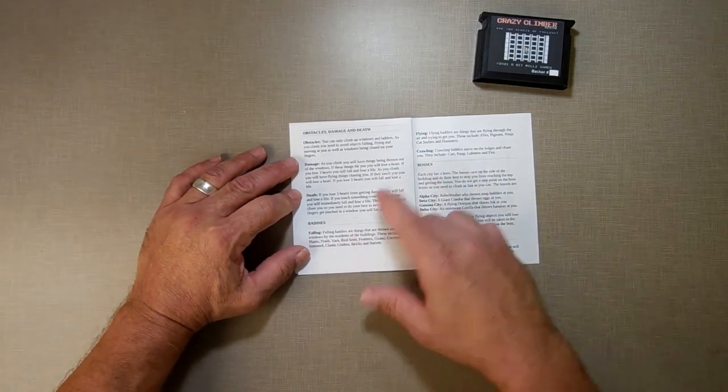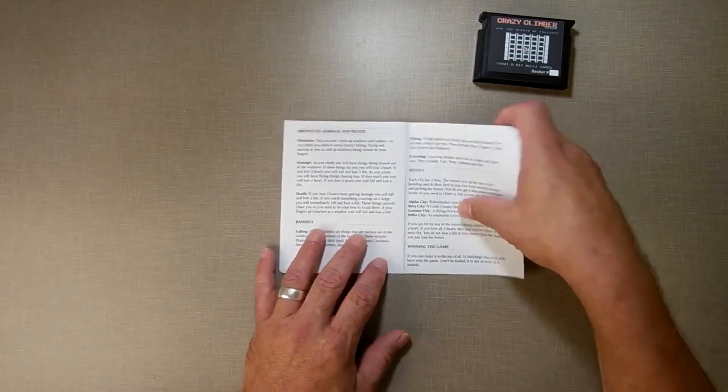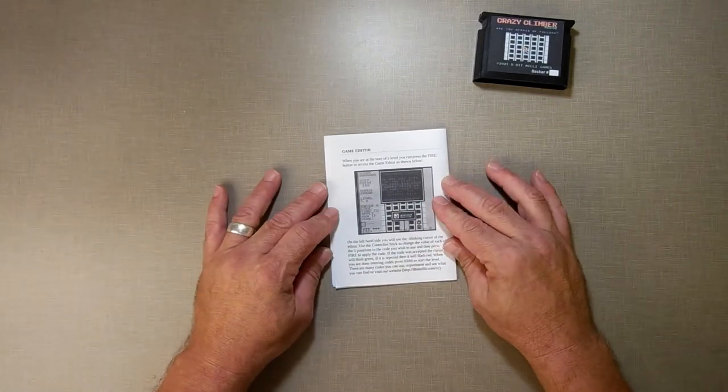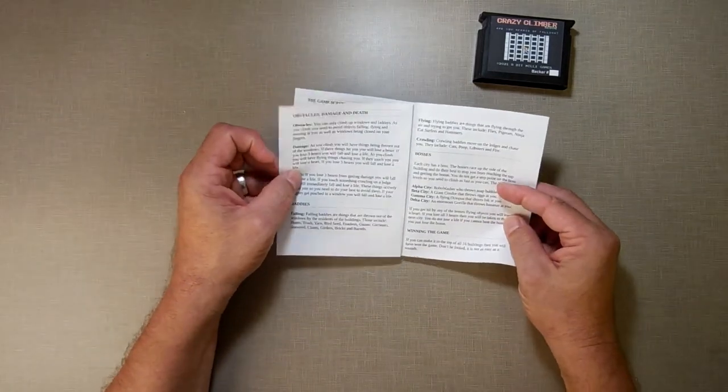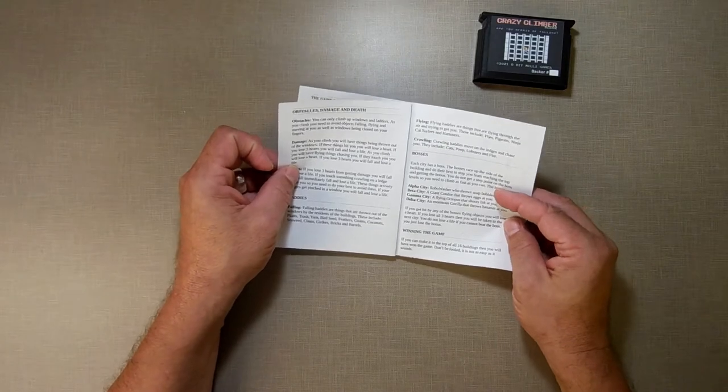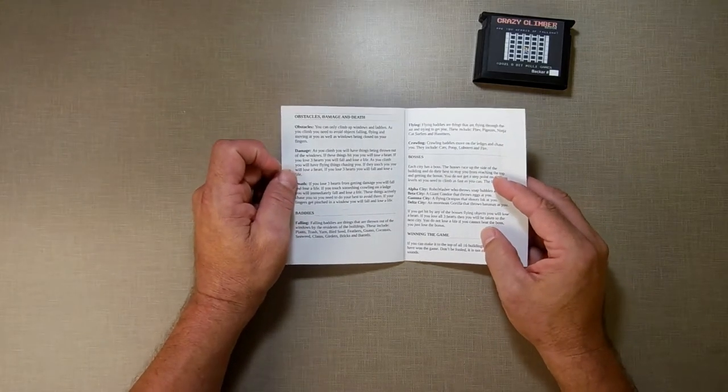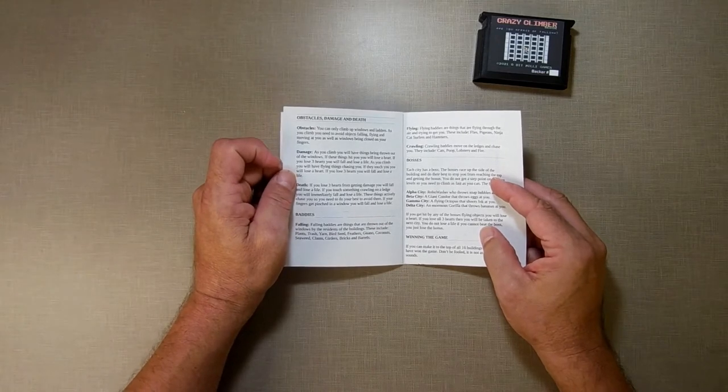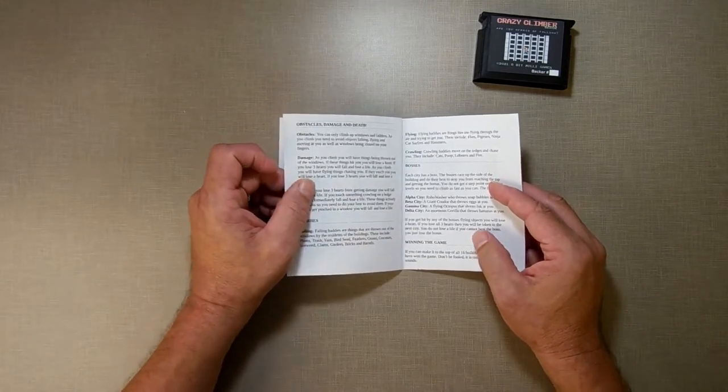And then the next page explains the obstacles, the damage, and the death that happen in the game. Then we have the baddies, the falling, flying, crawling baddies, the bosses, and how you win the game. Then on the back, it explains how the game editor works. You know, when I was writing this up, I realized how in-depth this game is.